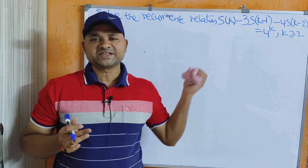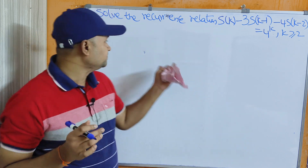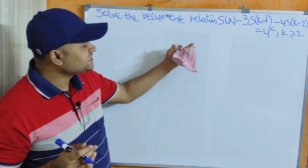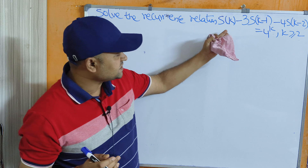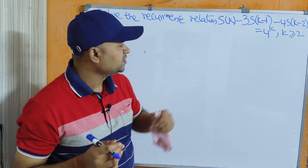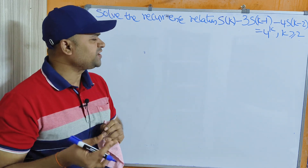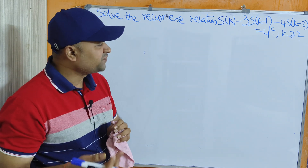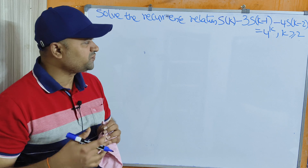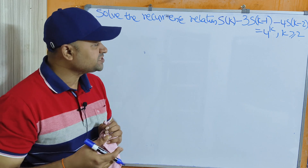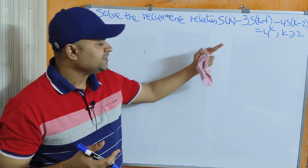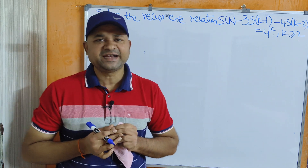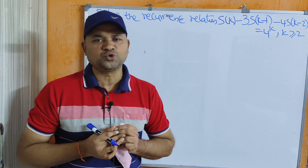Let us solve this problem. Solve the recurrence relation S(k) - 3·S(k-1) - 4·S(k-2) = 4^k, where k is greater than or equal to 2.